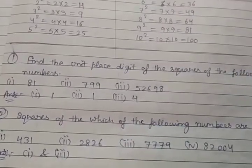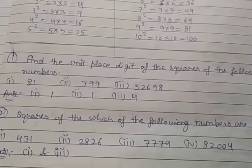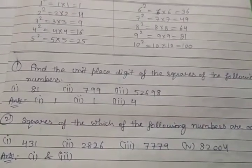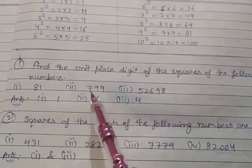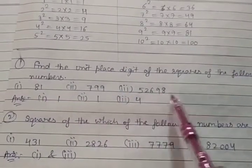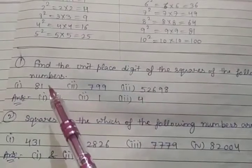Find the unit place digit of the squares of the following numbers.